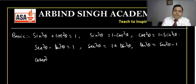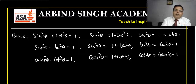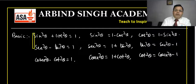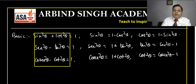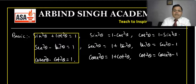The second identity is secant squared theta minus tangent squared theta equals one, so secant squared theta equals one plus tangent squared theta, and tangent squared theta equals secant squared theta minus one. Third: cosecant squared theta minus cotangent squared theta equals one, so cosecant squared theta equals one plus cotangent squared theta. These are the three basic identities you need to remember — all others are derived from these.